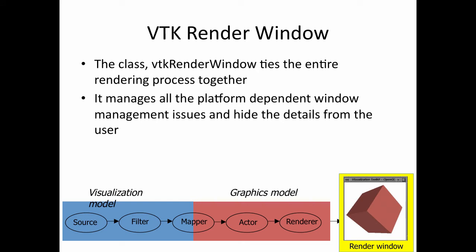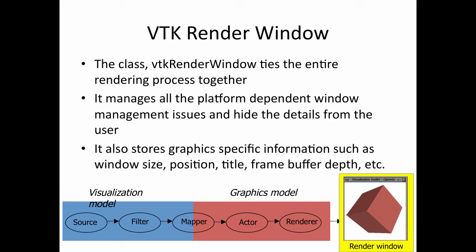The VTK render window manages all platform-dependent window management issues — Xwindow, Microsoft Windows, or Mac Windows — all requiring specific ways to create a window and drawable area. The VTK render window hides all those details so you don't need to consider platform-dependent specifics. Inside the VTK render window, it stores graphical information such as window size, position, title, and frame buffer depth, which can be set via VTK APIs. VTK renderer is internally implemented using graphics libraries such as OpenGL, and the VTK render window implements platform-specific details to manage the windows.